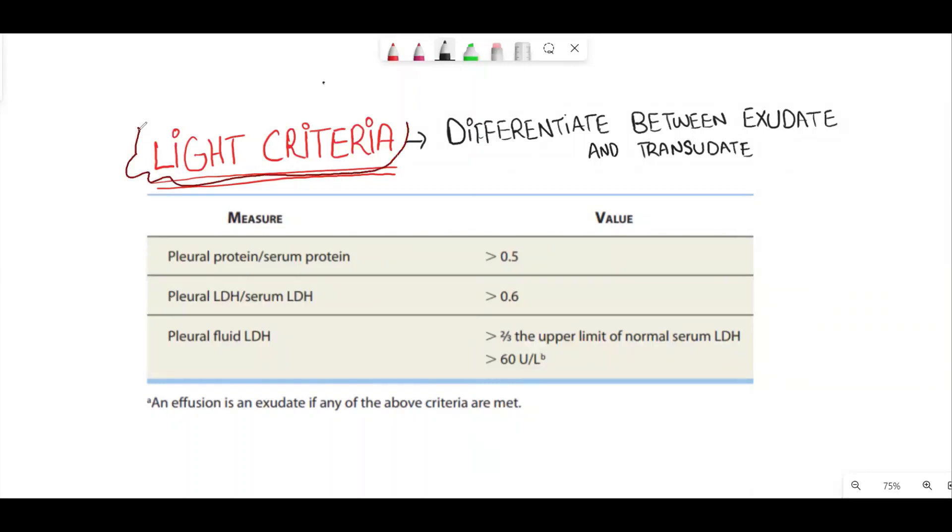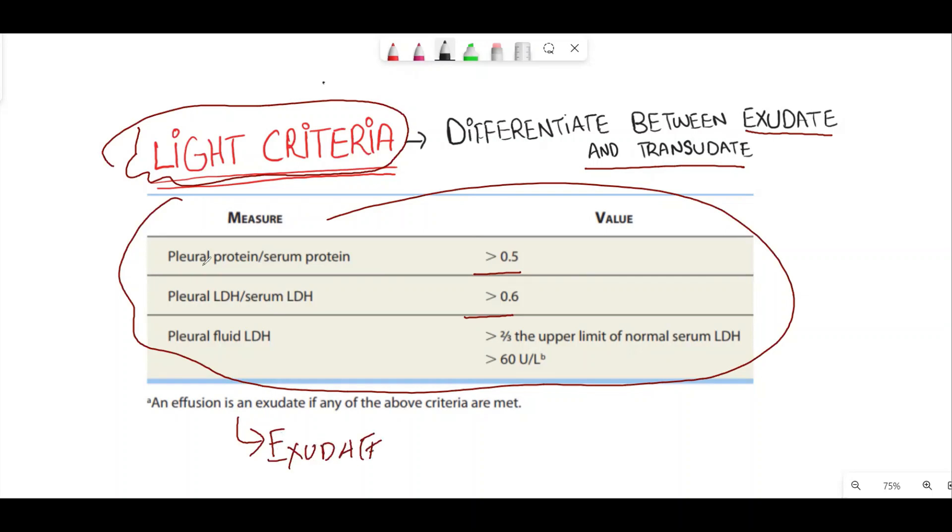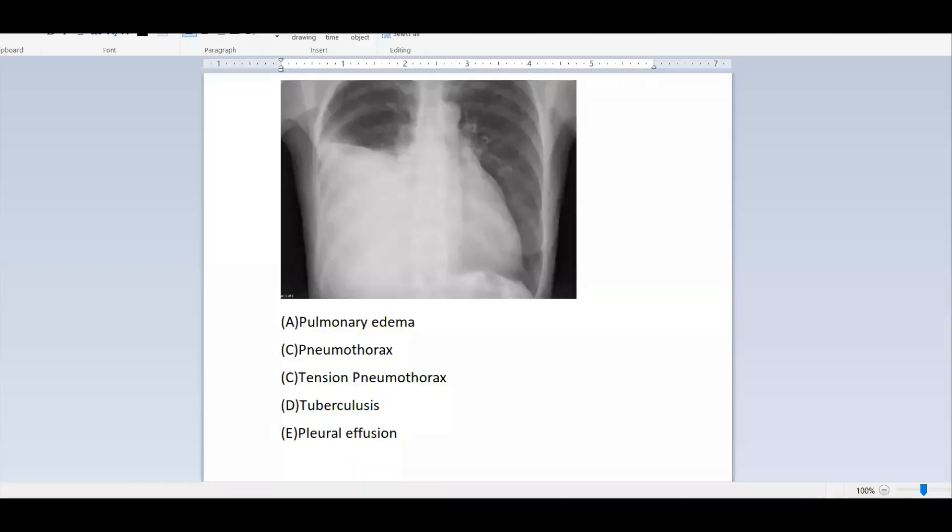The Light criteria is used to differentiate between exudate and transudate causes of pleural effusion. This table shows the Light criteria. If any of these criteria are met, we can label this pleural effusion as exudate. For example, if the pleural protein to serum protein ratio is more than 0.5, the cause of the pleural effusion is exudate. And if the pleural LDH to serum LDH ratio is more than 0.6, again the cause is exudate pleural effusion.